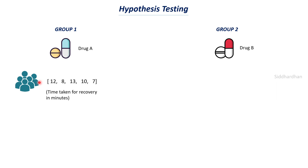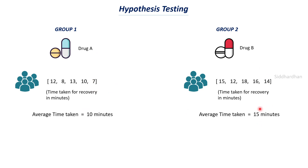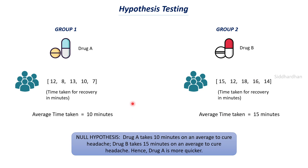The first person took drug A and it took about 12 minutes to recover from the headache. The time taken by each individual in group 1 was 12, 8, 13, 10 minutes and so on. For group 2, the time taken was higher. The average time taken by people in group A is 10 minutes when they took drug A, and the average time taken for drug B is 15 minutes. So the null hypothesis here is that drug A takes 10 minutes on average to cure a headache and drug B takes 15 minutes, meaning drug A is quicker — and everyone accepted this hypothesis.